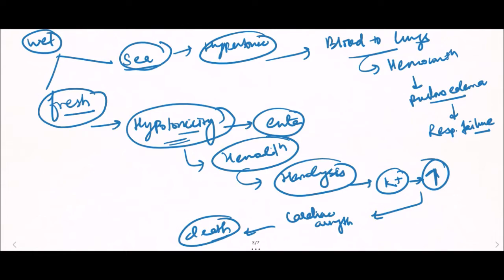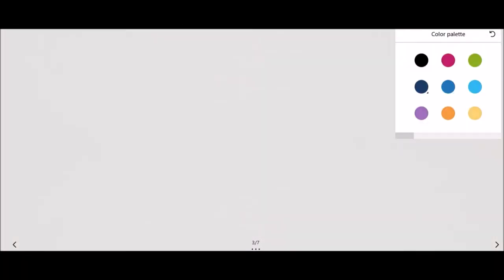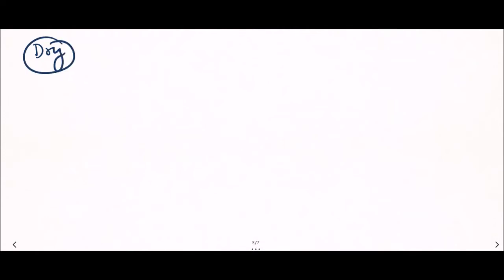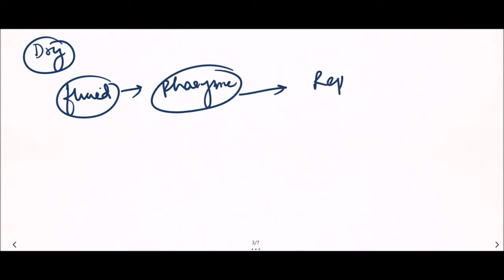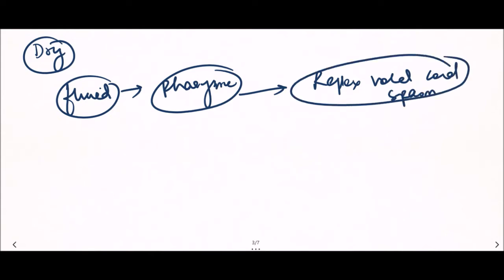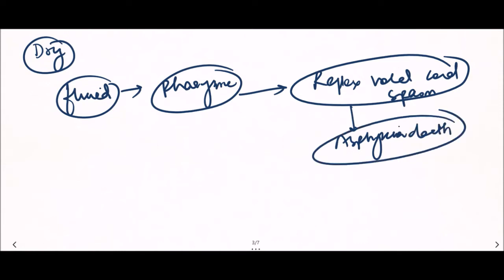In dry drowning, once fluid or liquid enters the pharynx or upper airways, there is a reflex glottic or vocal cord spasm. This reflex spasm is responsible for asphyxial death. So there is reflex glottic spasm or vocal cord spasm in case of dry drowning.